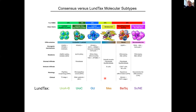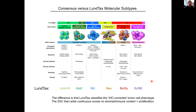We were very happy with the consensus because it provides common ground for bladder cancer researchers. Our IHC-corrected classifier does not have a stroma-rich or infiltrated group; instead, we use a single-sample classifier that adds continuous scores for stromal content, immune content, and proliferation. Excluding stroma and immune content from the classification itself does not mean we consider them unimportant — rather the opposite. We keep them separate so they can be analyzed on their own and in relation to the molecular subtypes of the cancer cells.